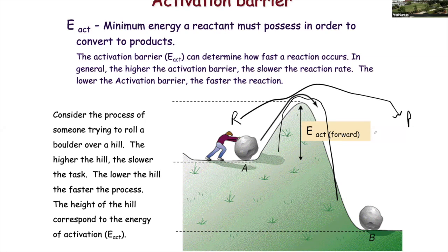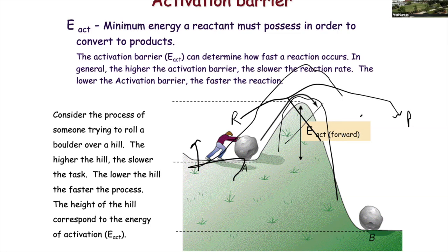When you raise the temperature of a reaction, you never change the size of that wall — that wall is always fixed for a reaction. What you do when you raise the temperature is give these chemicals enough energy so that they have a running start to get over that wall easily. That's why raising the temperature makes the reaction seem faster: you give more chemicals enough energy to overcome that barrier. That barrier never drops; it's always fixed.